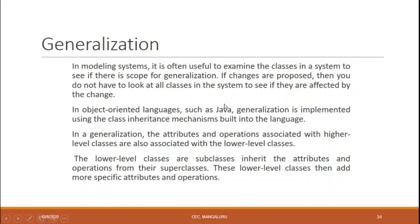If changes are proposed, you do not have to look at all classes individually. In object-oriented languages such as Java, C++, .NET, and Python, generalization is implemented using the class inheritance mechanism. In a generalization, attributes and operations associated with higher-level classes (superclasses) are also associated with lower-level classes (subclasses). The lower-level subclasses inherit attributes and operations from the superclass, and can additionally have their own specific attributes and operations.